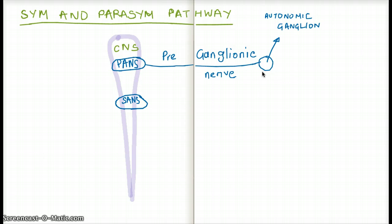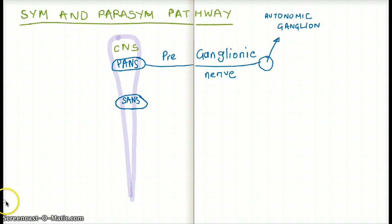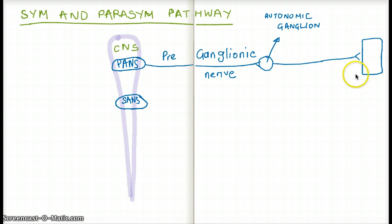Now let's talk about the differences. When a nerve goes from the parasympathetic nervous system, the preganglionic nerve makes a synapse with the autonomic ganglion. Once it makes that synapse, another nerve comes from there onto the effector cell.